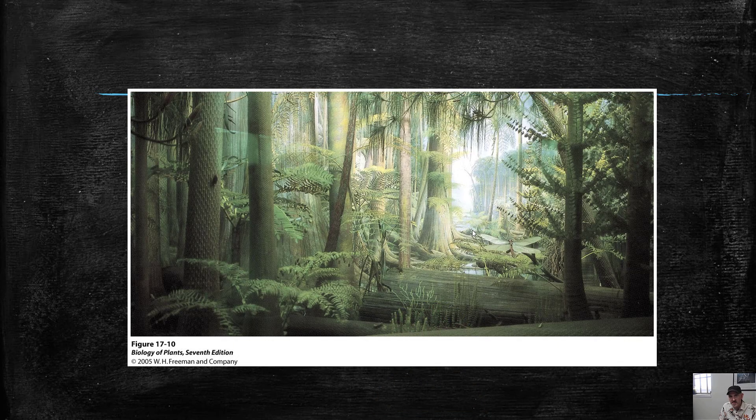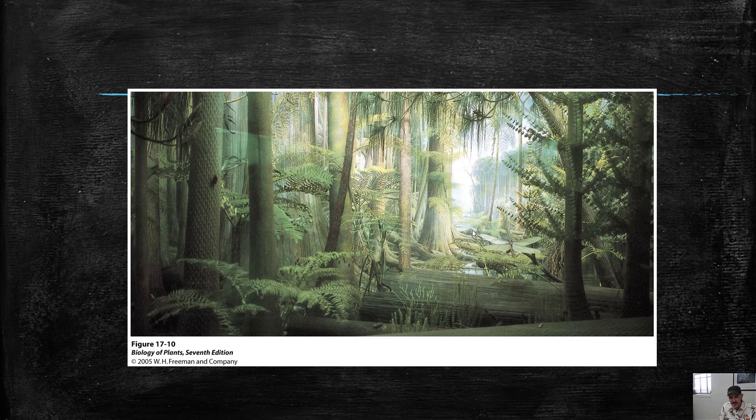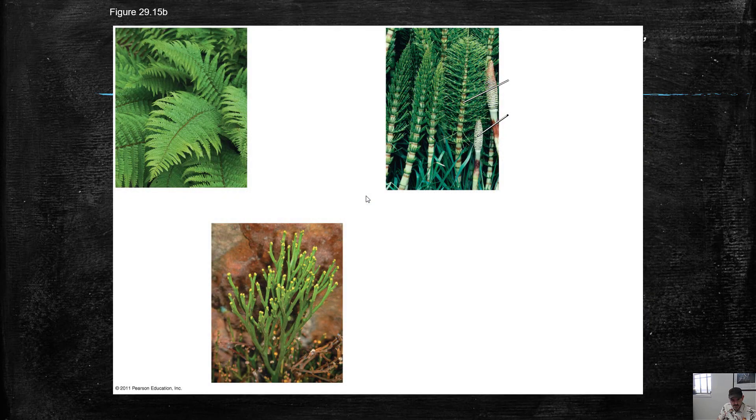So ferns, for example, have sporangia on the bottom of their leaves. So in the Paleozoic era, a lot of these seedless vascular plants were dominant. These are all different trees and different things that produce spores but did not make seeds. So they have vascular tissue. They make spores. They're ferns and fern-like plants. But they don't make seeds.